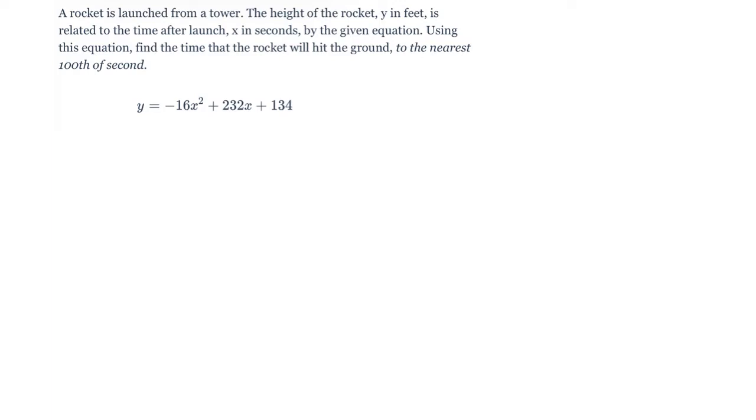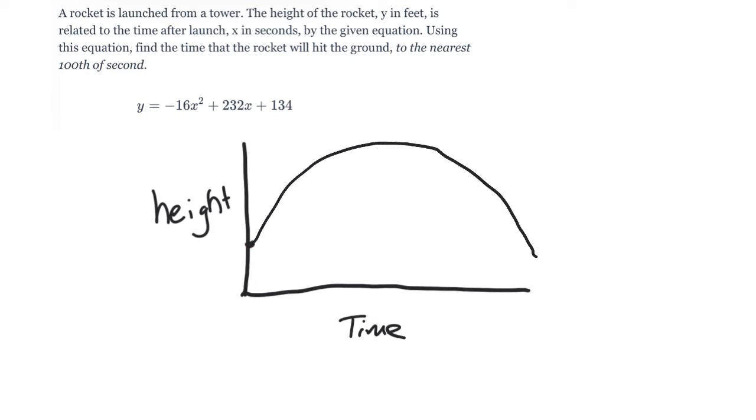So let me draw this out to show you a representation of the path of the rocket over time. So this would be time and this would be the height of the rocket. And we're starting at 134 feet because of this part right here. So the graph would look something like this. It's going to be a parabola and it's a perfect parabola because you're just going to go up to a certain point and stop and it's going to drop straight back down, assuming no wind or anything like that.